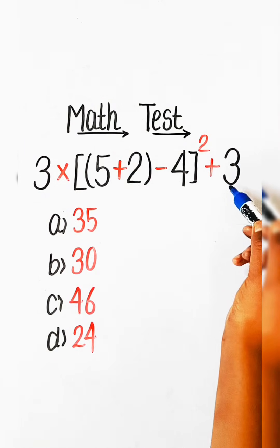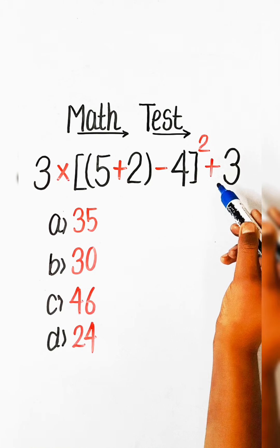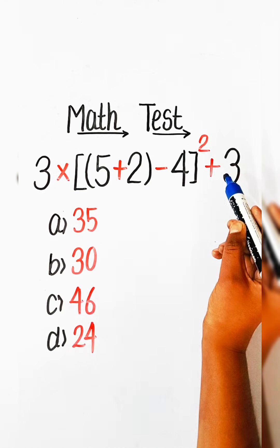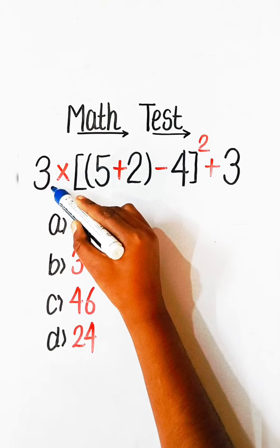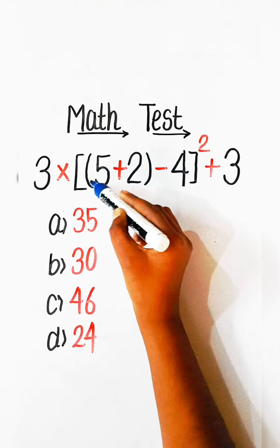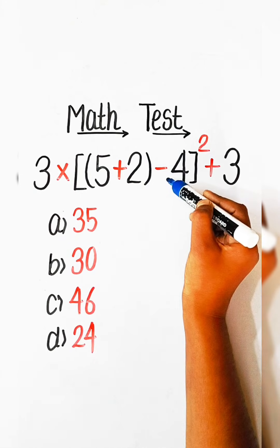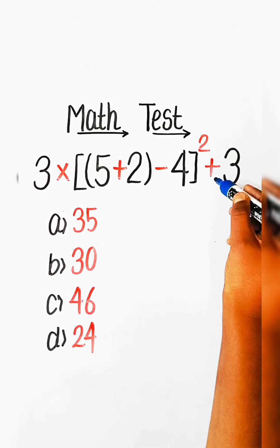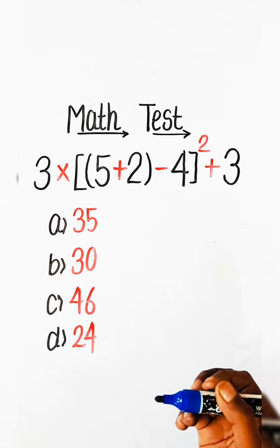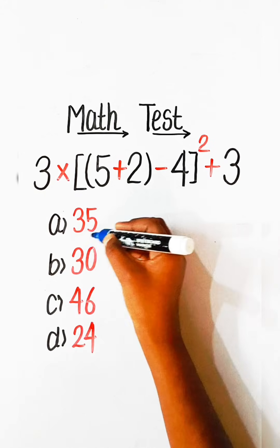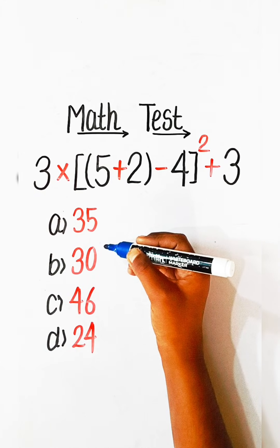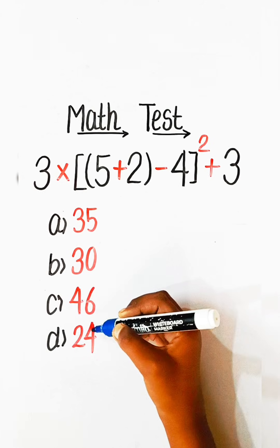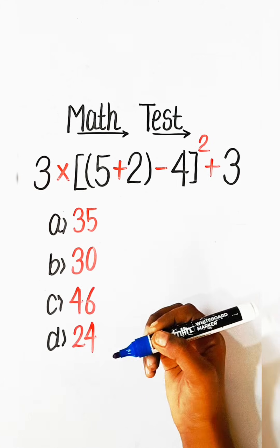Hello everyone. In this video we will solve this basic math expression: 3 multiply by (5 plus 2) plus minus 4 squared plus 3 equals to what? Option A: 35, Option B: 30, Option C: 46, Option D: 24.